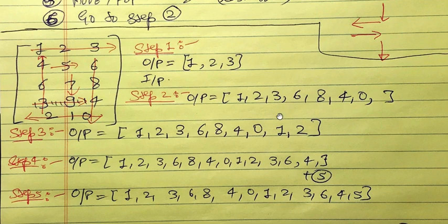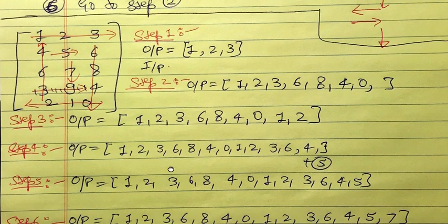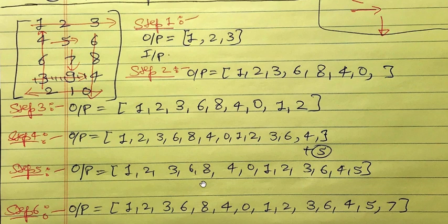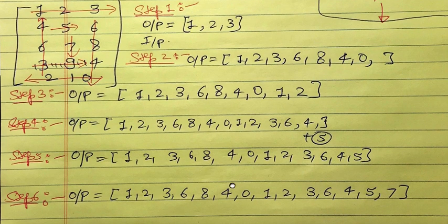I strongly recommend going through this larger example carefully, as it makes the concepts much clearer. If you misunderstood anything from the smaller example, it will become clear here. Check if your output matches mine — after six steps, we finish the entire spiral traversal.